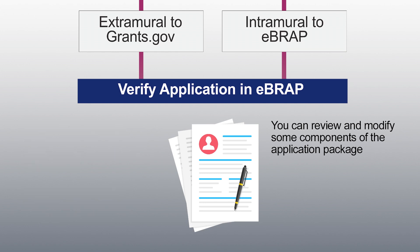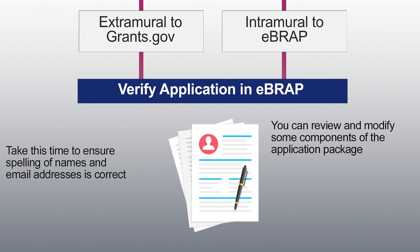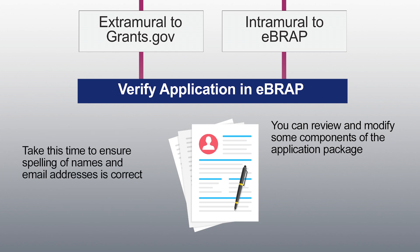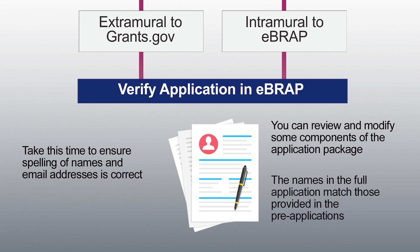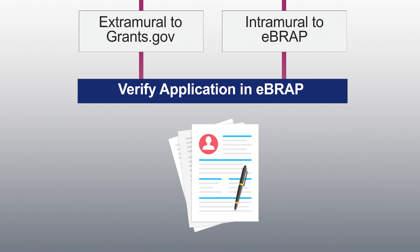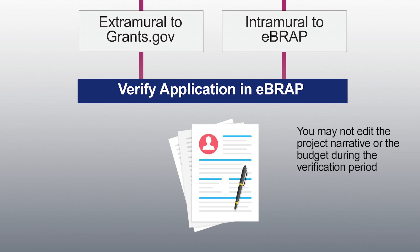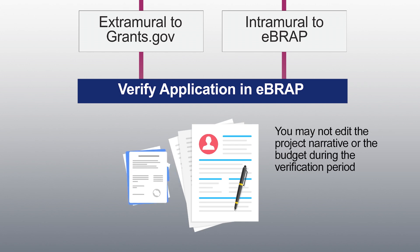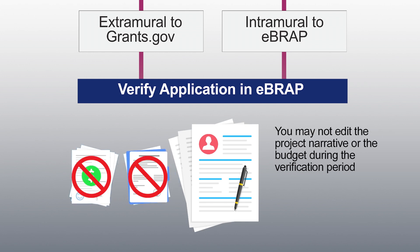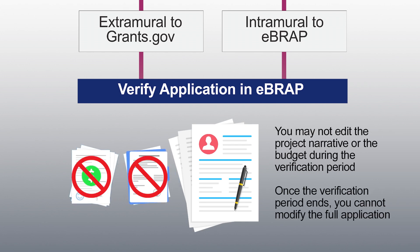Use the verification period to ensure the correct application documents are submitted and that they are arranged in the correct order. Also check details such as spelling of names and email addresses, and that the names in the full application match those provided in the pre-application. Keep in mind that you cannot edit the project narrative or the budget after the application submission deadline, and once the verification period ends, you can no longer modify the full application.